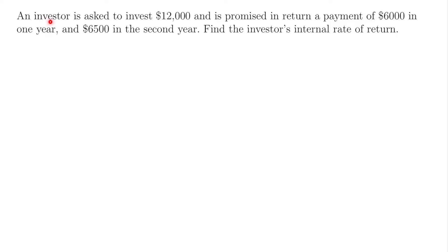Here's our second example. An investor is asked to invest $12,000 and is promised in return a payment of $6,000 in one year and $6,500 in the second year. Find the investor's internal rate of return. We have three different cash flows: one cash flow out of $12,000, which is the amount the investor is investing, and then two cash flows in — he will be receiving a payment of $6,000 in one year and $6,500 in the second year. Let's draw a timeline for this scenario.